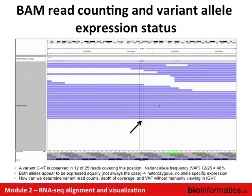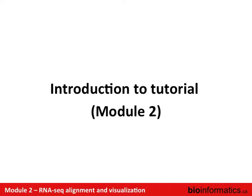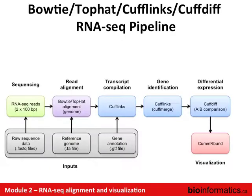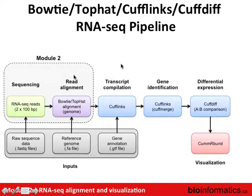Often we don't want to manually look in IGV to calculate variant allele frequency — we want to know which variants exist, the read counts supporting them, and the variant allele frequency computationally. We'll introduce a simple tool called BAM Recount, which for any arbitrary position you give it will count the bases at that position. For example, it'll say 13 Cs, 12 Ts, 0 Gs, 0 As. That's the last part of the tutorial. We're doing Module 2, getting our RNA-seq reads and performing the read alignment using Bowtie and TopHat.